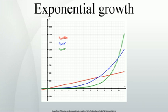Reformulation as log-linear growth: If a variable x exhibits exponential growth, then the log of x grows linearly over time, as can be seen by taking logarithms of both sides of the exponential growth equation. This allows an exponentially growing variable to be modeled with the log-linear model. For example, if one wishes to empirically estimate the growth rate from intertemporal data on x, one can linearly regress log x on t.